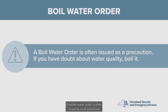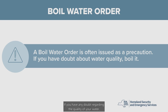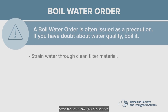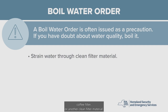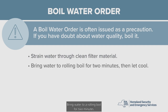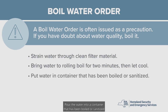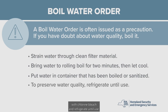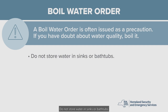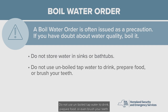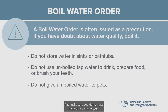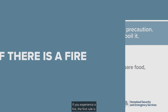A boil water order is often issued by local authorities as a precaution when drinking water is suspected to be contaminated by pathogens. If you have any doubt regarding the quality of your water, boil it: strain the water through a cheesecloth, coffee filter, or other clean filter material; bring water to a rolling boil for two minutes, then let cool; pour into a container that has been boiled or sanitized with chlorine bleach and refrigerate until use. Do not store water in sinks or bathtubs. Do not use unboiled tap water to drink, prepare food, or brush your teeth, and do not give unboiled water to pets.